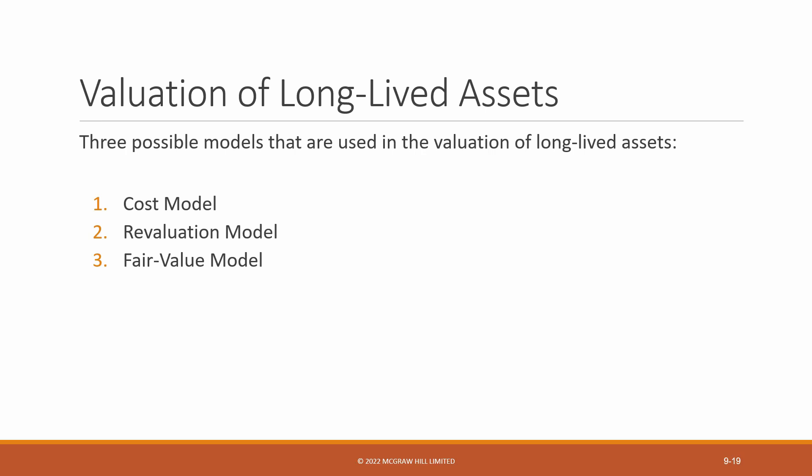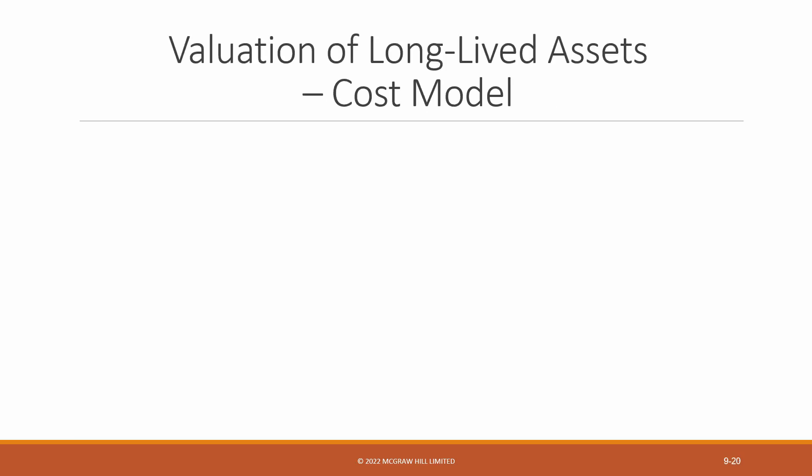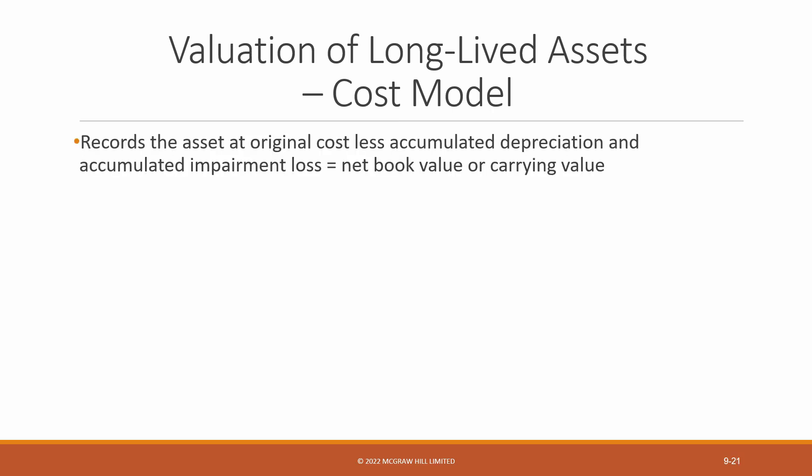Let's start with the cost model. It's going to be the most familiar for all of you because it's what's taught in introductory financial accounting. Under the cost model, we record our long-lived assets at their original cost, less accumulated depreciation and less accumulated impairment losses since the asset was first purchased. The sum is called either the net book value or the carrying value.